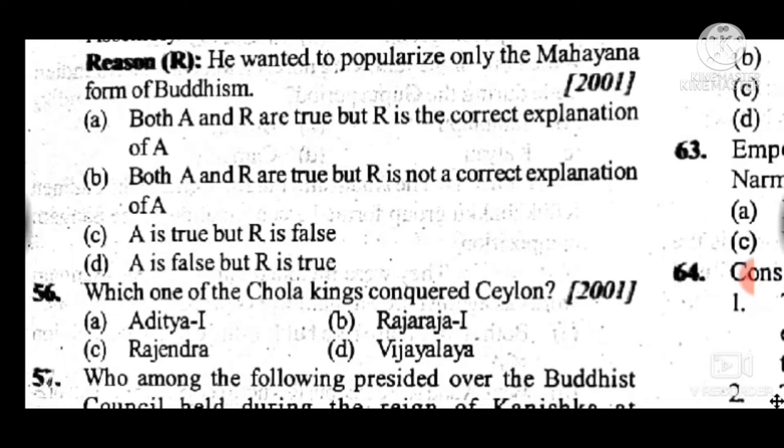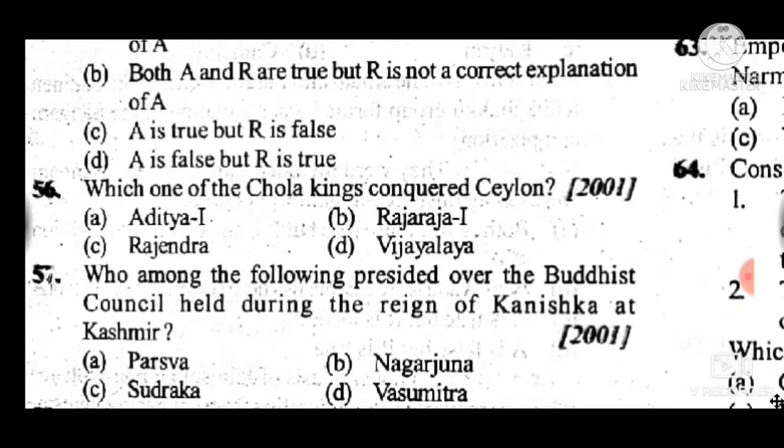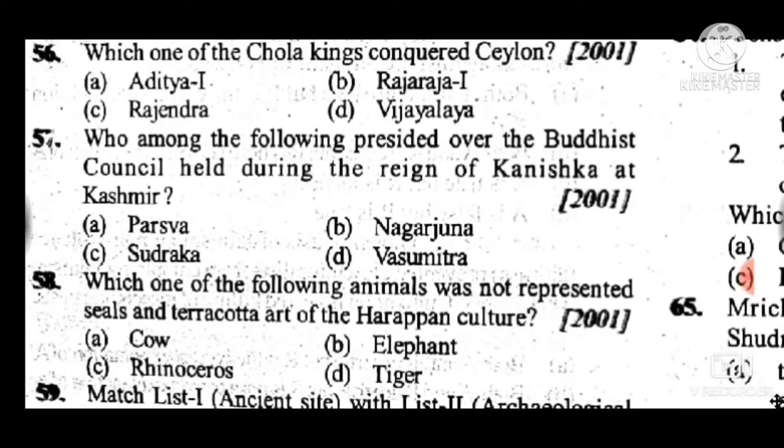Question 57: Who among the following presided over the Buddhist council held during the reign of Kanishka at Kashmir? Answer is D, Vasumitra. Question 58: Which one of the following animals was not represented on seals and terracotta art of the Harappan culture? Answer is A, the cow was not represented.